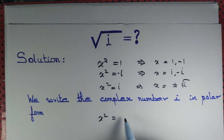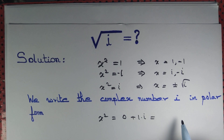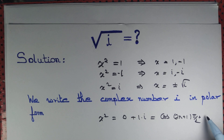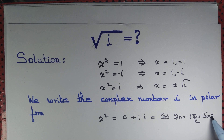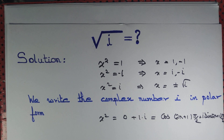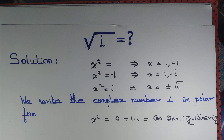We write i = 0 + 1·i, where 0 = cos((2n+1)π/2) and 1 = sin((2n+1)π/2). We have now got the number x² in polar form.